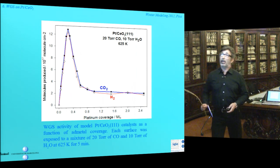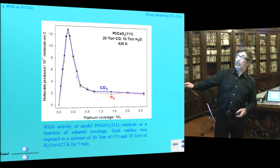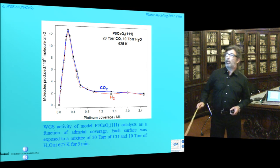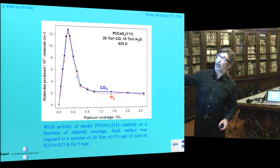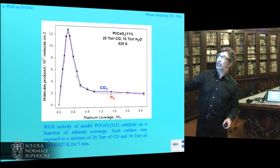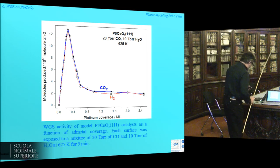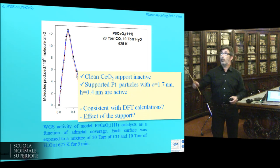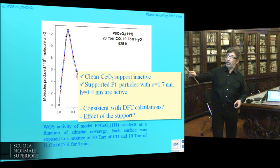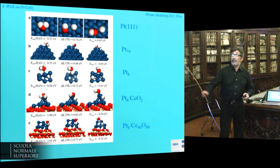This is the experimental activity of the water-gas shift model catalyst of platinum supported on ceria, shown as a function of the amount of metal on the ceria. Small particles are reactive — they produce CO2 and hydrogen — but when the particles grow, this reactivity disappears. So the clean support is inactive, and when you support this particle it becomes active. The question is whether this is consistent with DFT calculations and what is the effect of the support.